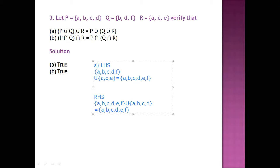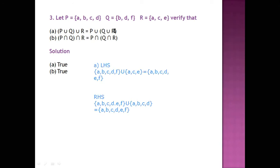So here we can see that LHS is equal to RHS. It means the first statement is true. And it should be true because it is the associative rule — it is an associative rule, so it is true.